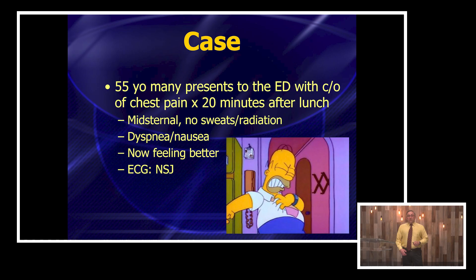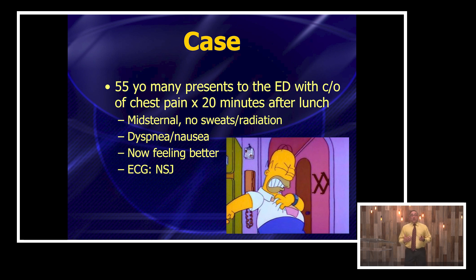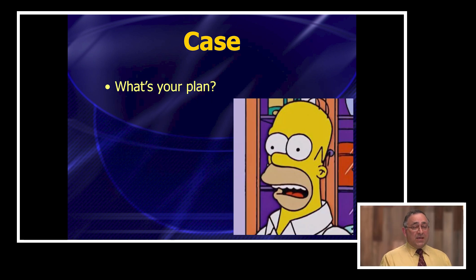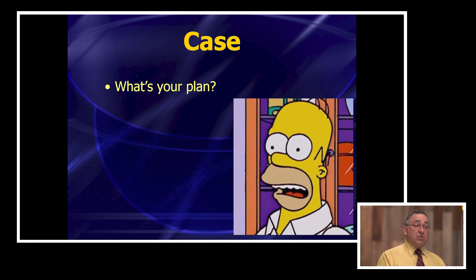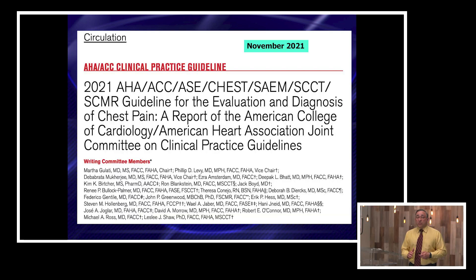In this session, we're going to spend some time talking about some new chest pain guidelines that you've got to know about. We'll start with a quick case. You have a 55-year-old man who comes to the emergency department complaining of chest pain for about 20 minutes, and it's relatively low risk. The patient has some midsternal chest pain, no diaphoresis or radiation, but there is some shortness of breath and nausea, and now he's feeling a little bit better. His EKG shows just some nonspecific junk. So what's your plan with this patient? It's not a slam dunk admission, but it's also not somebody you're going to feel totally comfortable sending home. This is the classic low-risk type of ACS concern — you're not worried about PE, not worried about dissection, but you have some concerns about acute coronary syndrome.